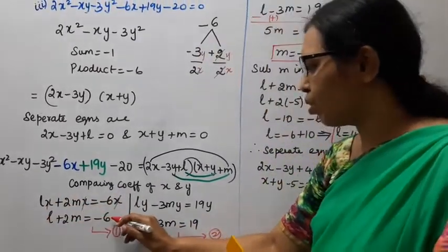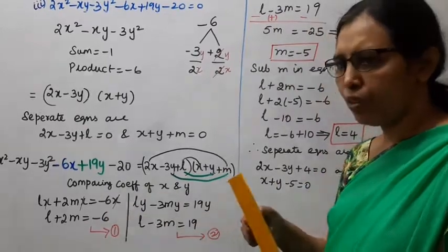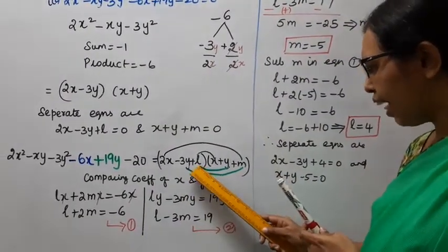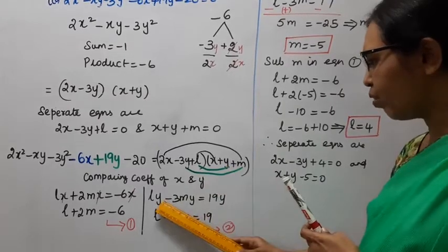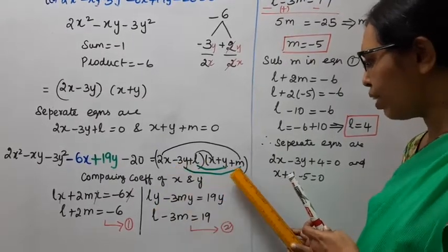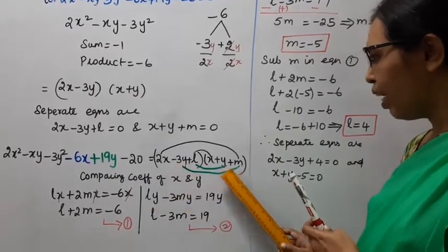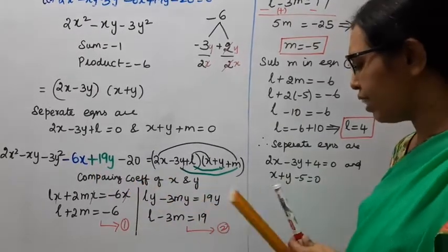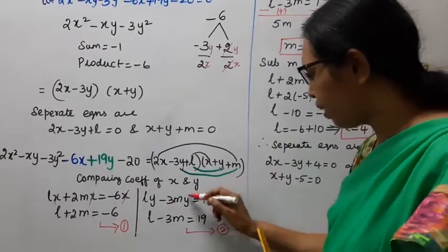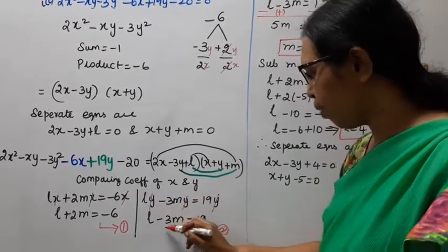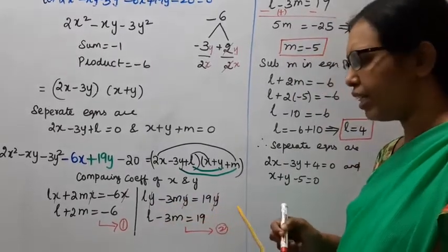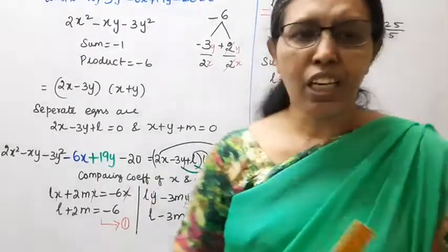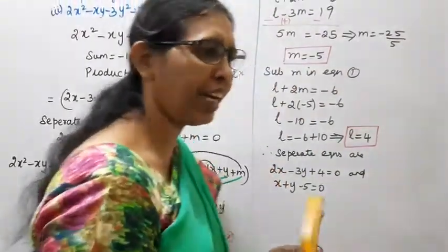2m is equal to minus 6. This is equation one. Comparing the coefficient of y: L into y, minus 3m into y, minus 3my. After cancelling y, L minus 3m is equal to 19.